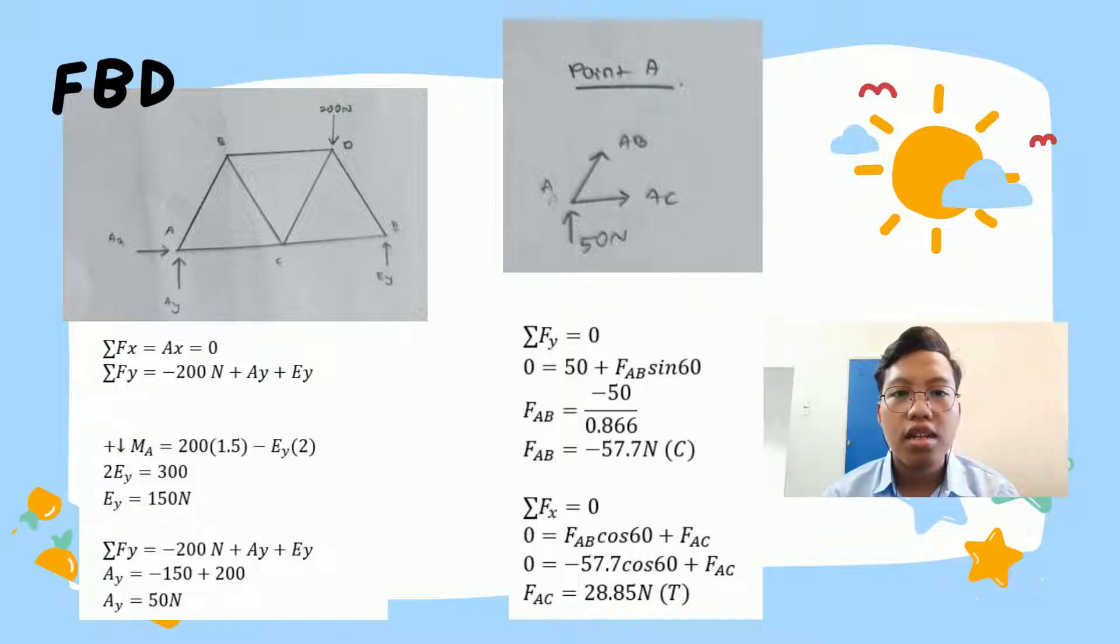Next we will use sum of FX. Sum of FX equals zero. Zero equals FAB cos 60 plus FAC. We can use FAB cos 60 because from AB we can get its X component, cosine equals adjacent. So FAB cos 60 plus FAC. FAB we already got as negative 57.7. We substitute, so negative 57.7 cos 60 plus FAC. We will get force AC equals 28.85 N, and it is tension because it is positive.